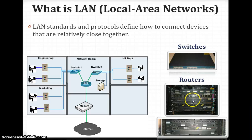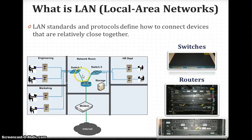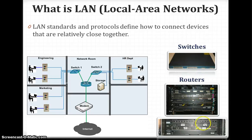These are copper switches and routers — these are real-life routers and switches. You can think of switch one and switch two. When you want to transfer data from one switch to another switch you need the router. These are real-life routers: the top one is a Cisco 7600 and the bottom one is a Cisco 7200.